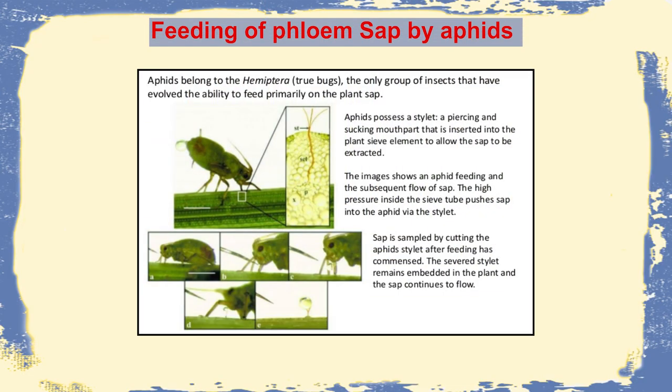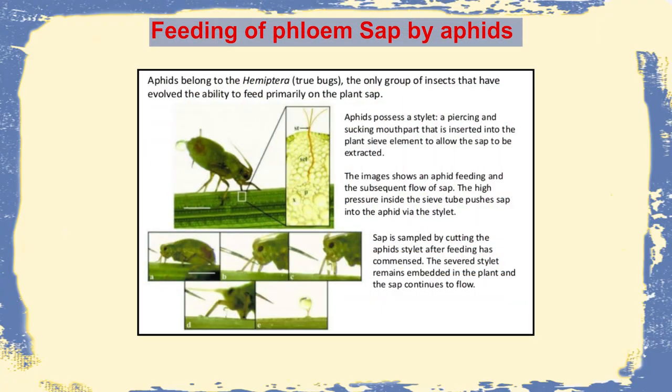Phloem is a very important food for different insects. Aphids, which belong to Hemiptera (true bugs), feed on phloem sap. They have a stylet with which they pierce the plant and feed on the sap. When we cut the stylet, the phloem sap concentration present in the stylet can be measured, and as we separate the aphid from the plant body, the phloem sap oozes out from that particular tissue.